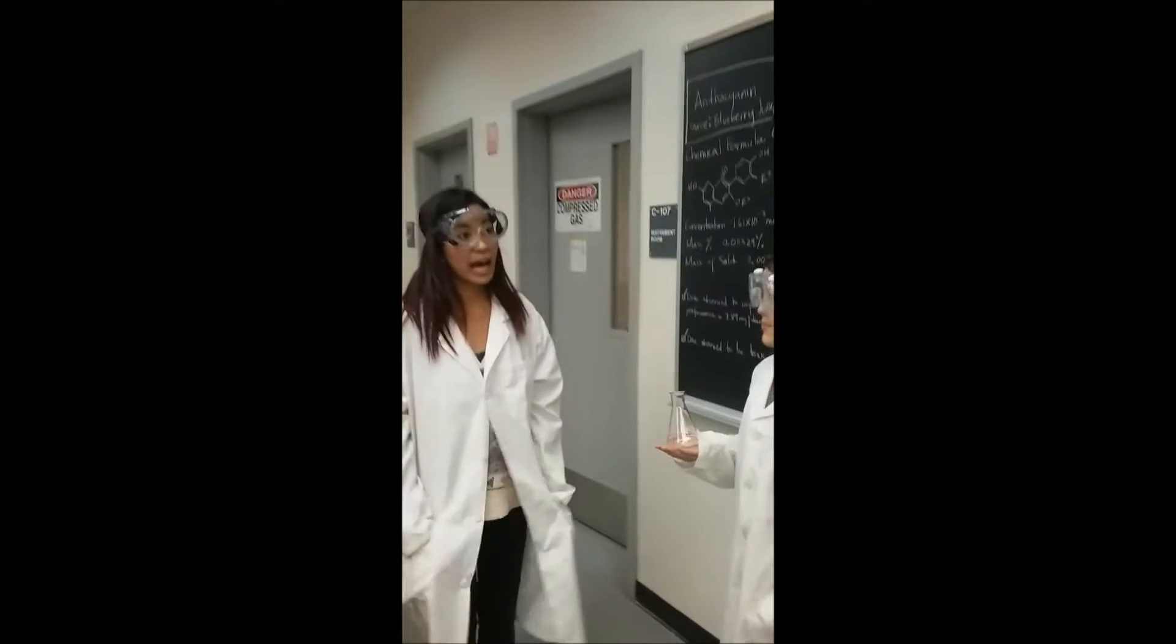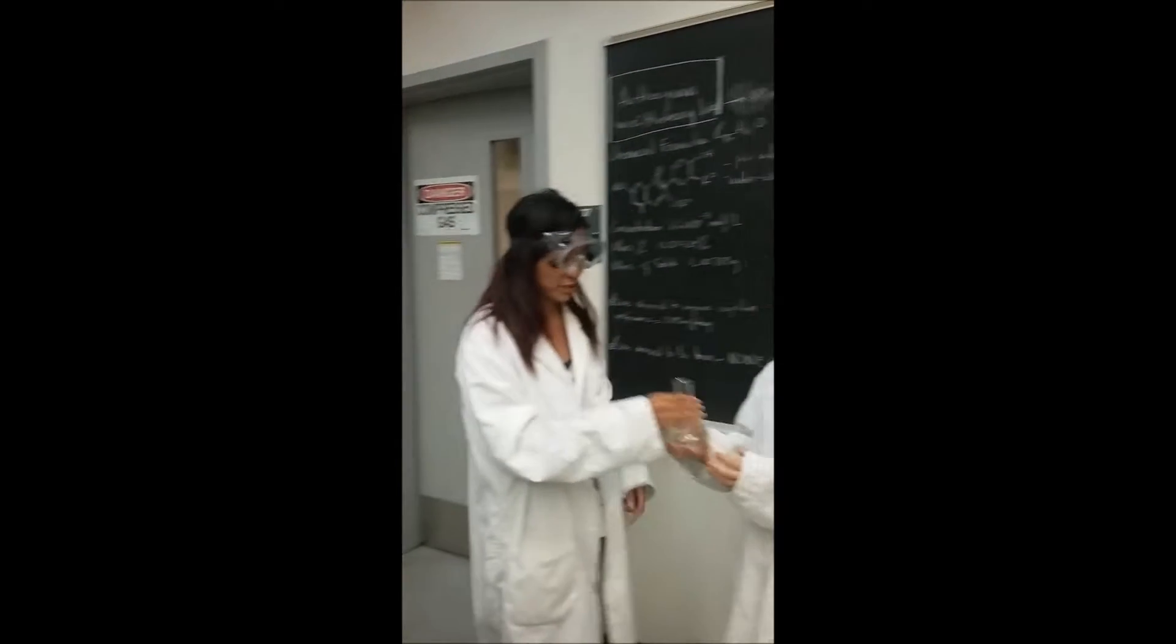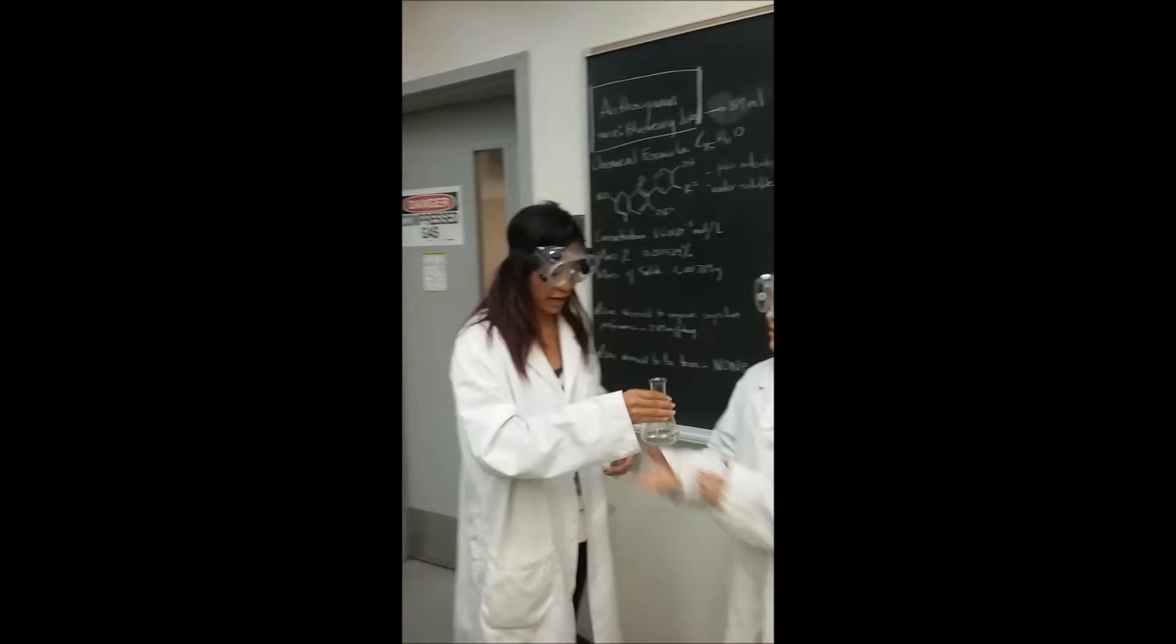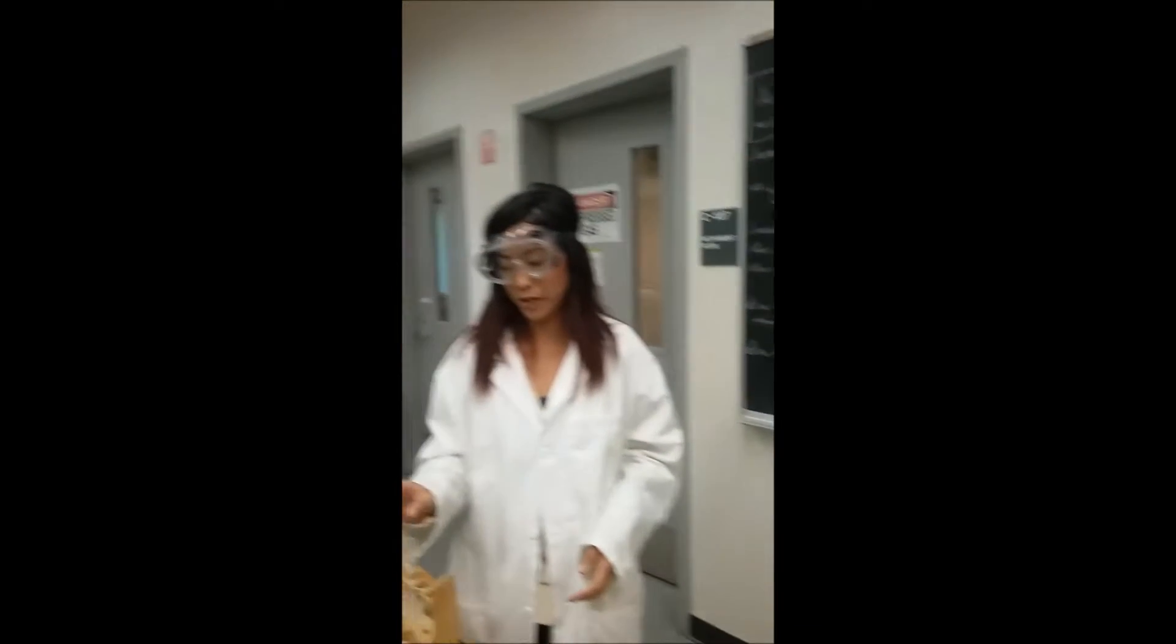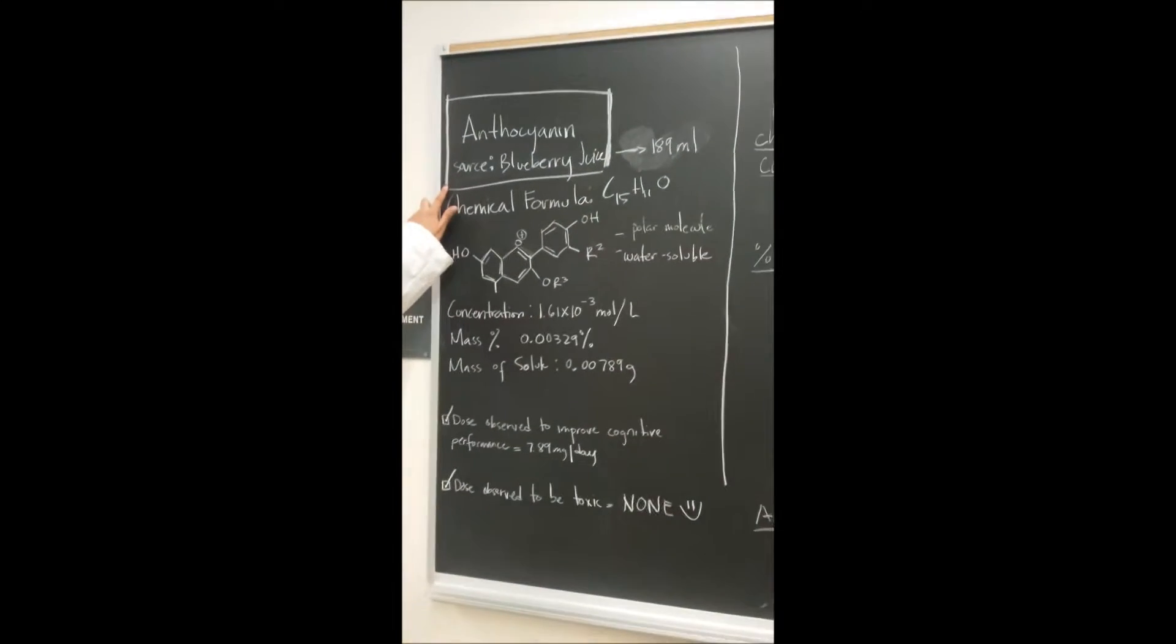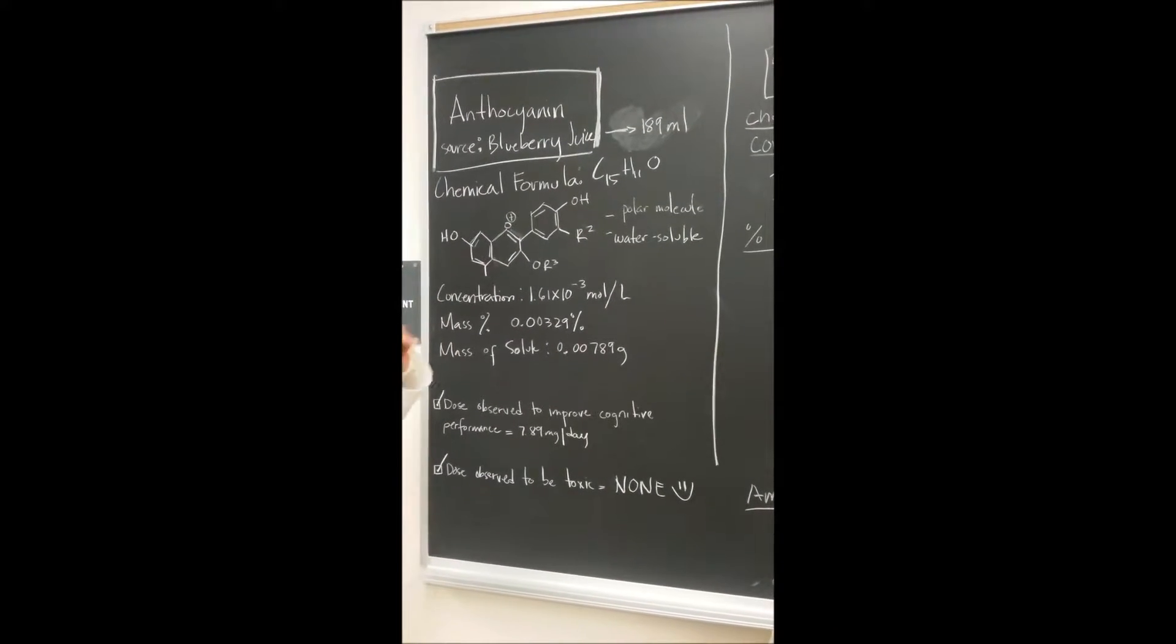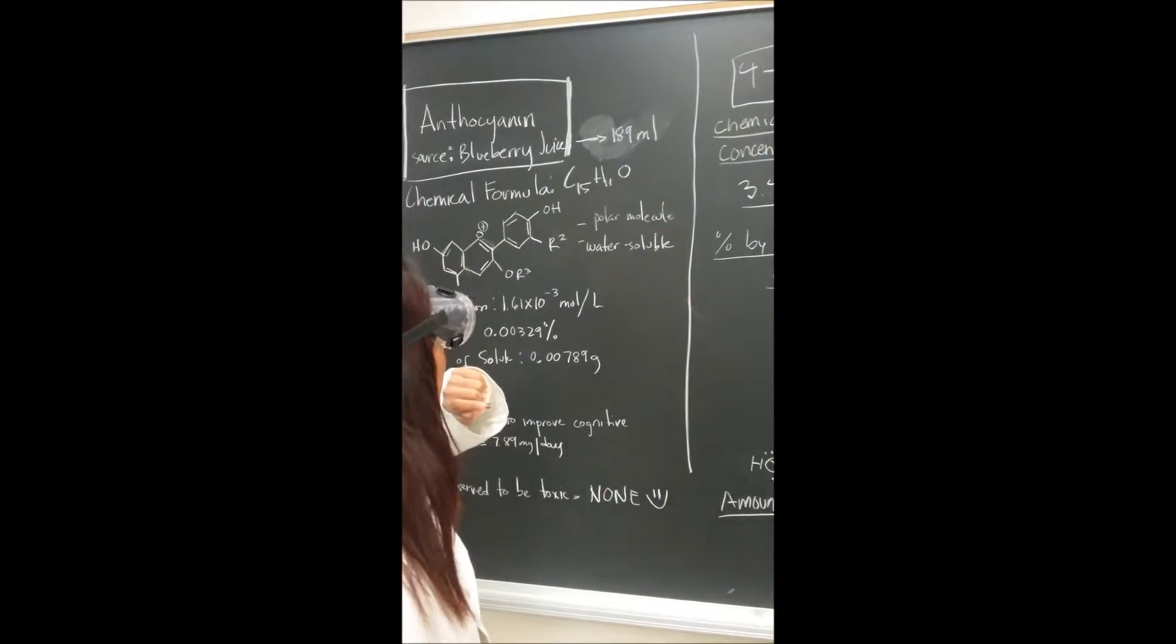So we actually have four important ingredients, and first we're going to start off with water. I'll have you hold that. So we've already pre-measured everything. The first thing we need is anthocyanin, which we're going to get from a blueberry juice, and we're actually going to need 189 ml of that.